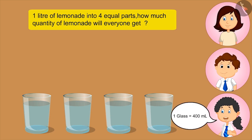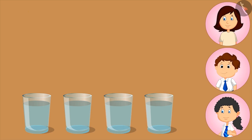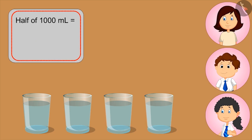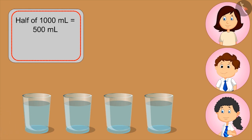Hmm. Four hundred ml. No, this is not right. You tell, Bholu. Hmm, I don't know. Please, you explain, Mom. How many milliliters are there in a liter? Thousand milliliters. Correct. Now, if I fill these two glasses, how much lemonade will be left in the jug? Half the jug is still full. What is the half of a liter? Kids, you can pause the video and think about the answer. Five hundred ml. This means two glasses contain five hundred ml of lemonade.